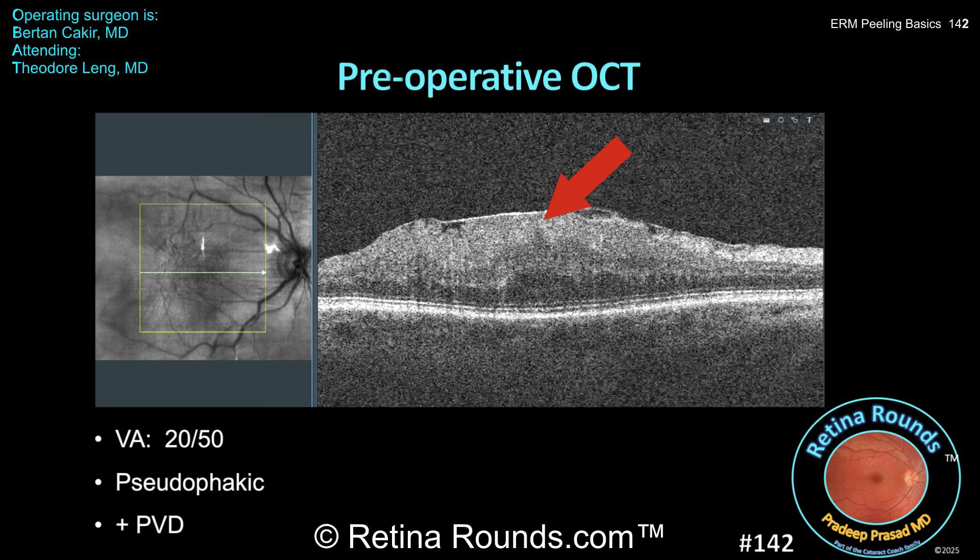This is a 50-year-old pseudophagic patient with a PVD and an idiopathic epiretinal membrane. On the OCT, you can see the hyperreflective line on top of the macula, which represents the ERM. Two things are important to notice. First, overlying the fovea, we see inner retinal layers extending over an elongated outer nuclear layer, highlighted by the red arrow. These are abnormal since we shouldn't see internuclear or interplexiform layers overlying the outer nuclear layer at the fovea, and this is termed ectopic inner foveal layers.